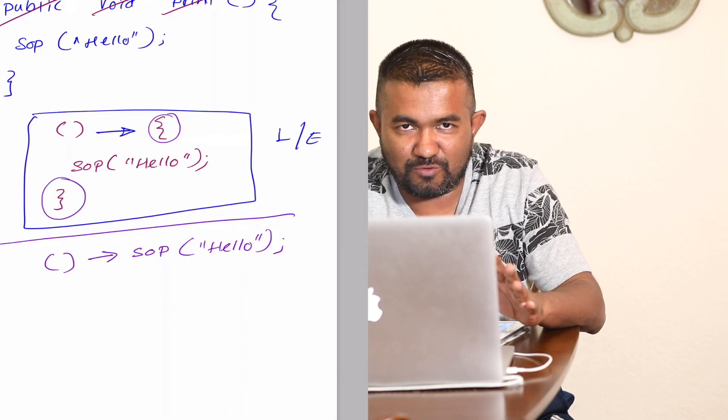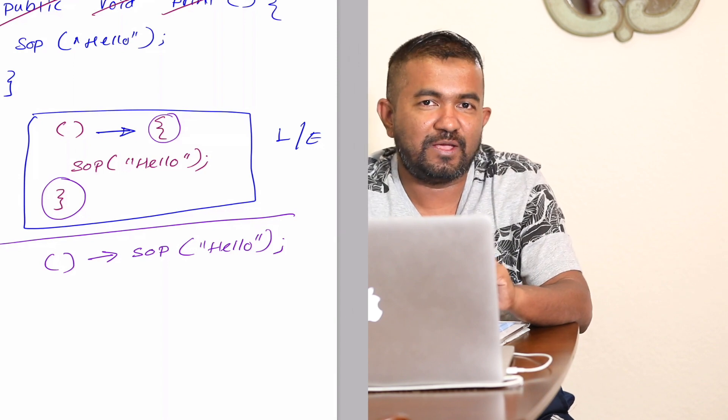You can write any Java method and convert it to a lambda expression, but you can't write this code in any IDE and compile it yet — it will fail. We are one step behind, and that missing piece is a functional interface. We missed that part, and that's what we're going to discuss in the next video. If you're confident you can read ahead and try to understand the connectivity between lambda expressions and functional interfaces, go ahead — otherwise wait for the next video.